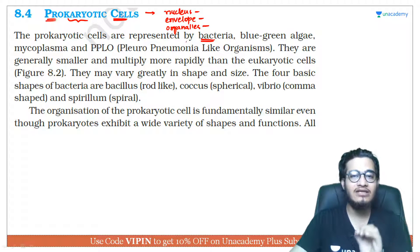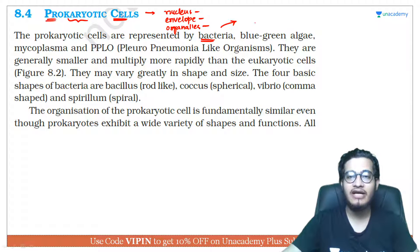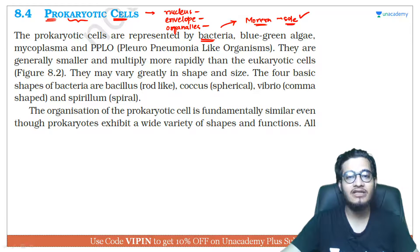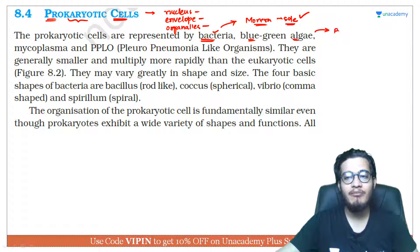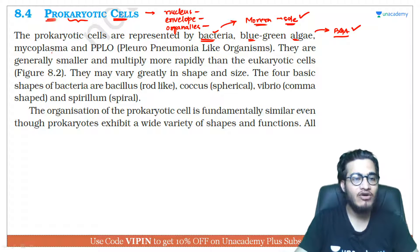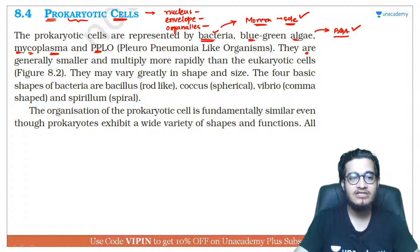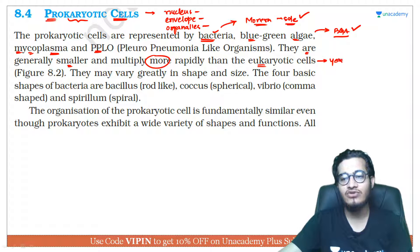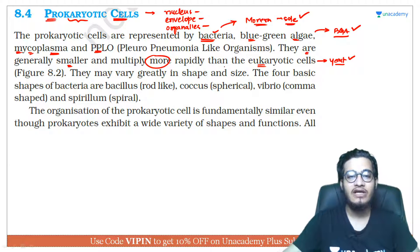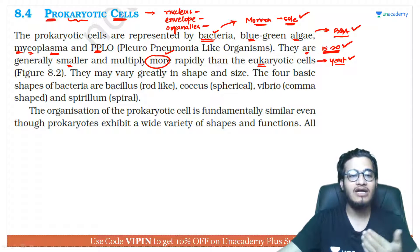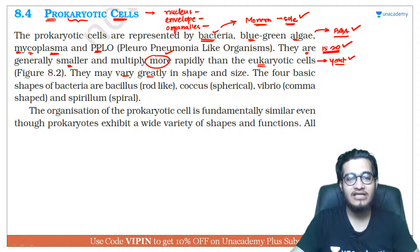Prokaryotic cells are represented by bacteria. In prokaryotic cells, an entire kingdom comes — Monera — in which all prokaryotes fall. The majority of the population in Monera is represented by bacteria, which includes archaebacteria and eubacteria, blue-green algae (also a bacteria, also called BGA or cyanobacteria, which is photosynthetic), mycoplasma, and PPLO (pleuro-pneumonia-like organisms), which are the smallest living cells.